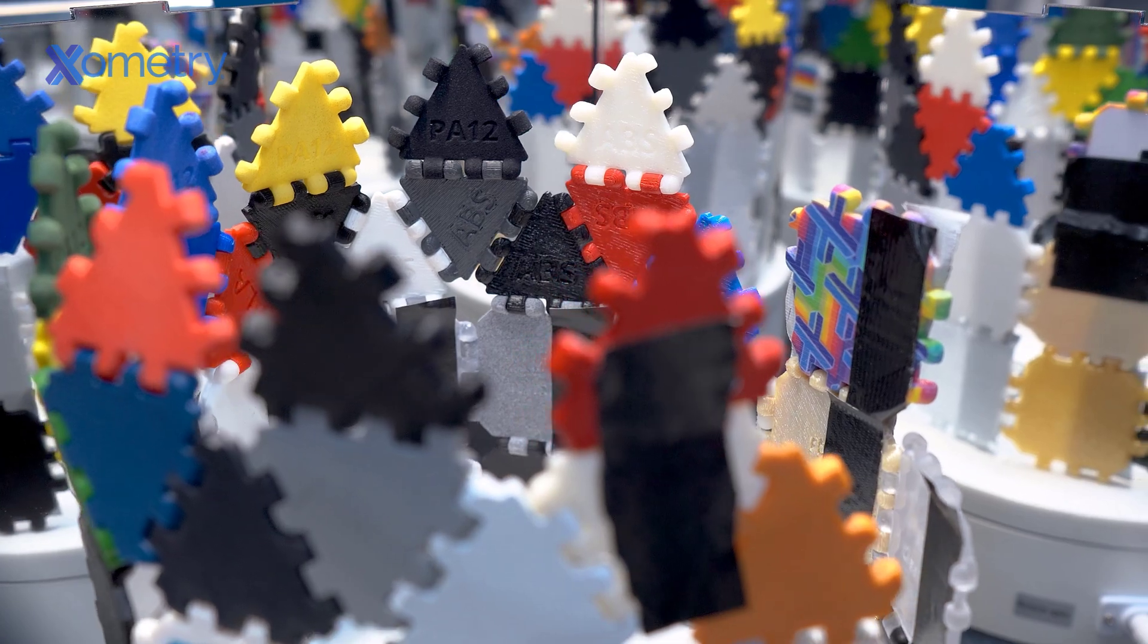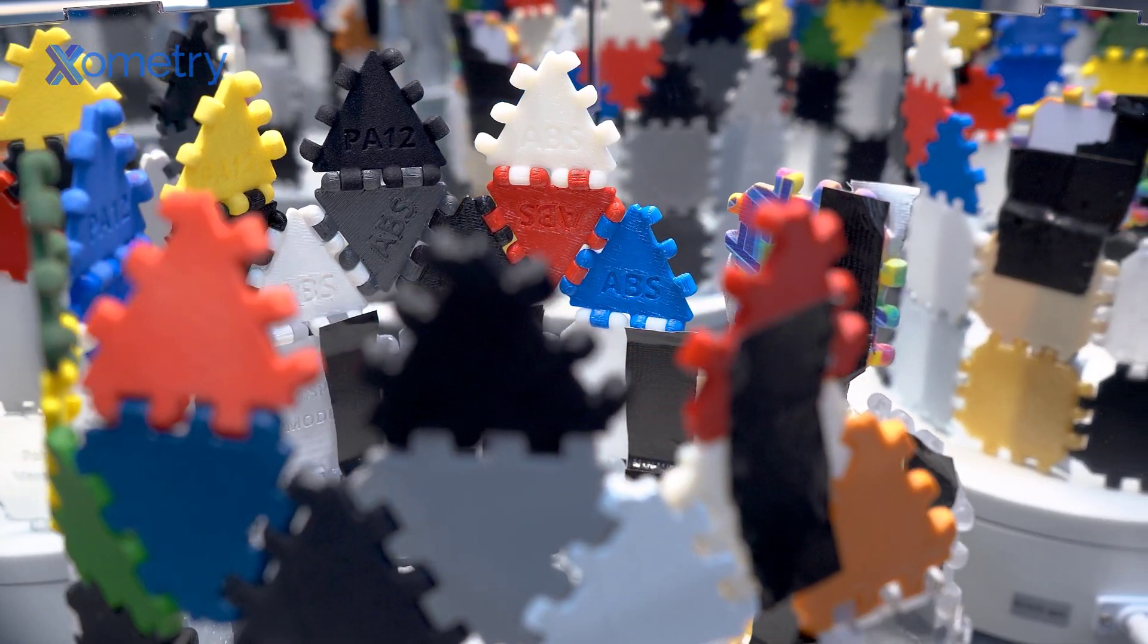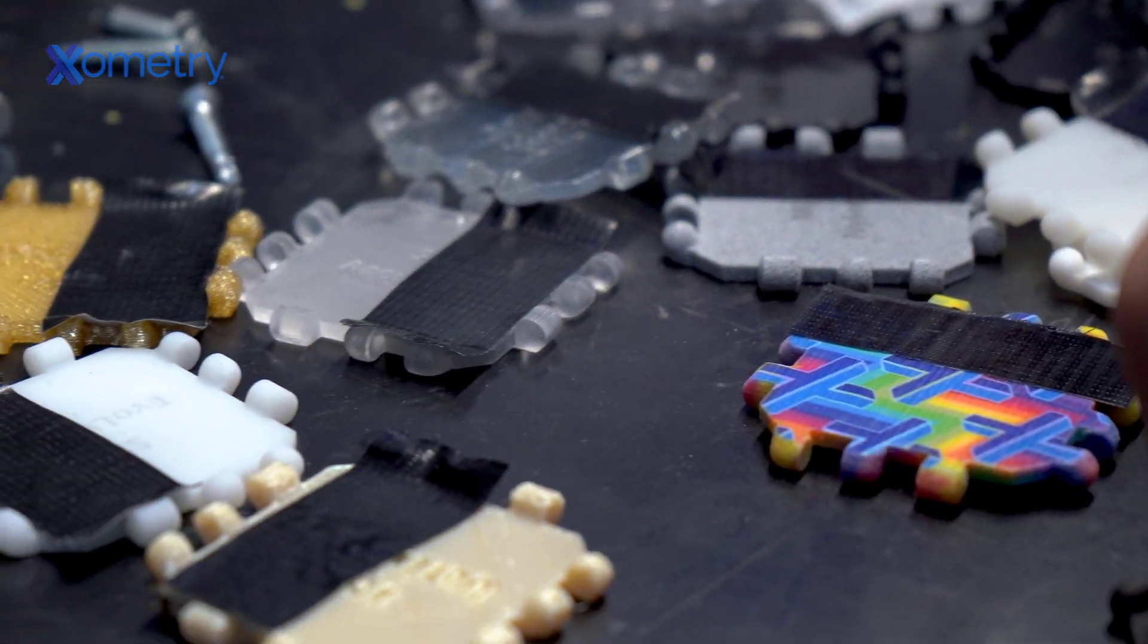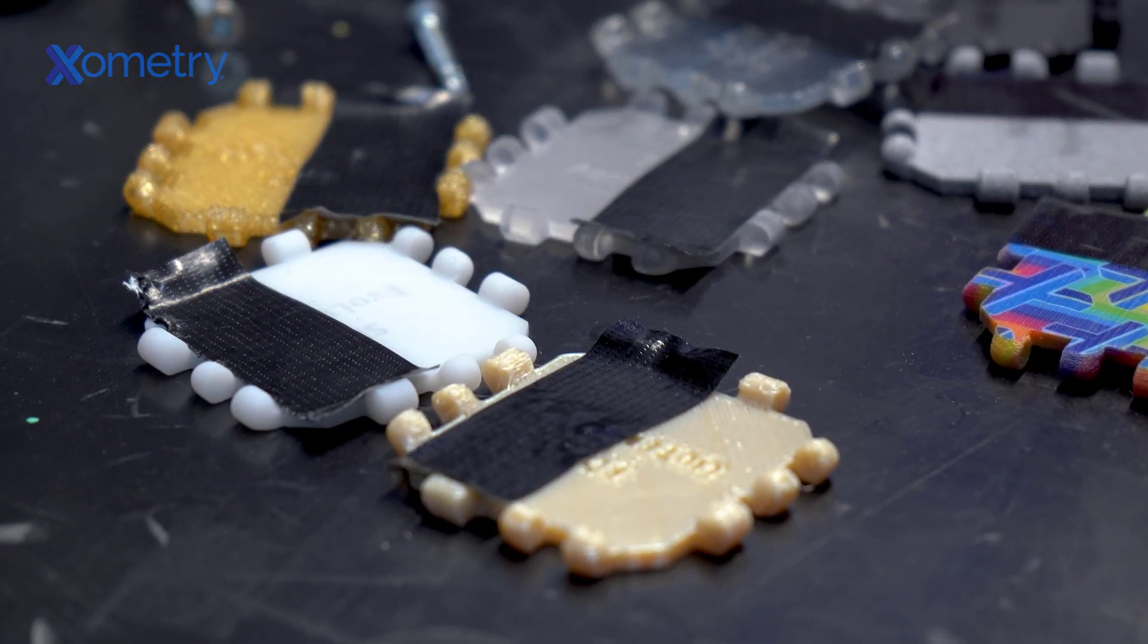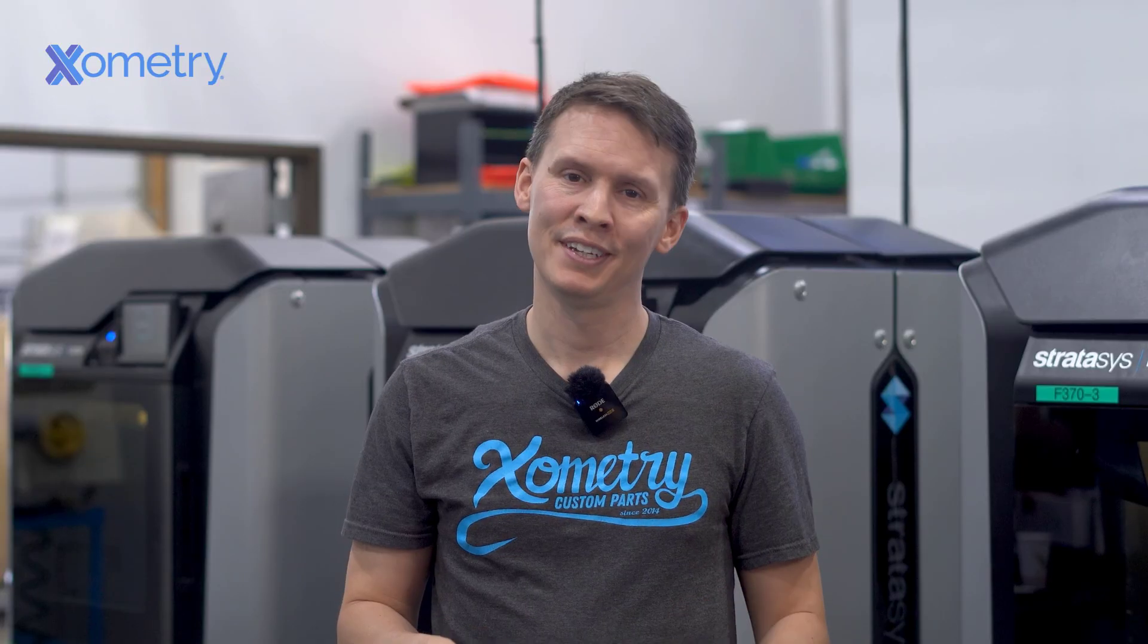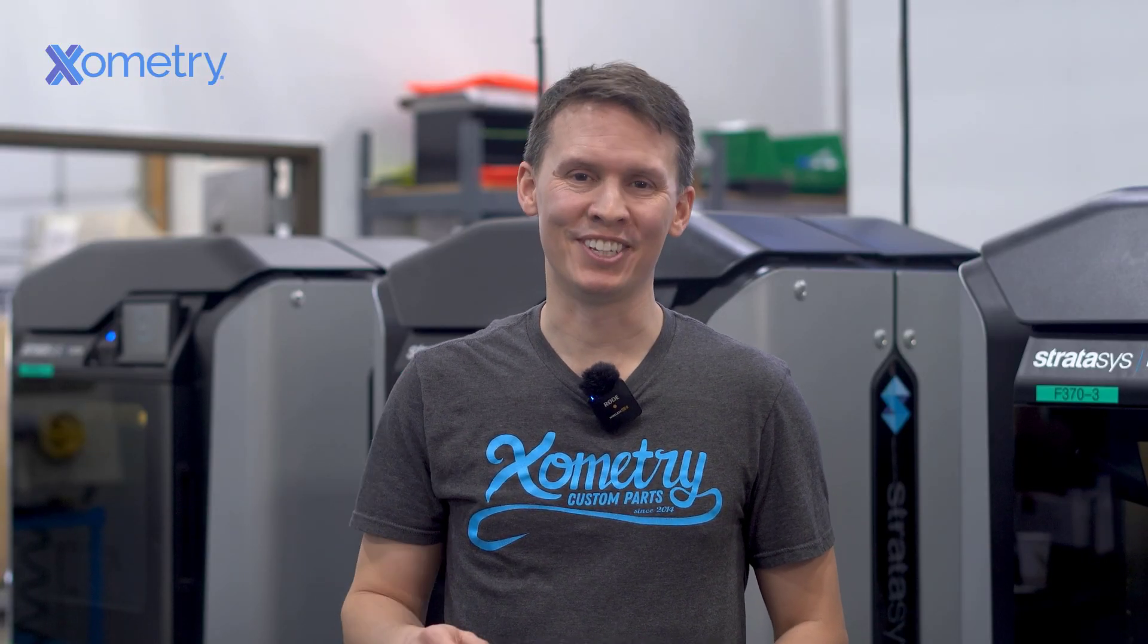In this test, we'll expose our materials to UVC light for roughly a week. The parts will rotate around the light source via a turntable to ensure all materials are exposed consistently. We masked a portion of the part to show the contrast between exposed and unexposed areas. So let's put these materials to the test.